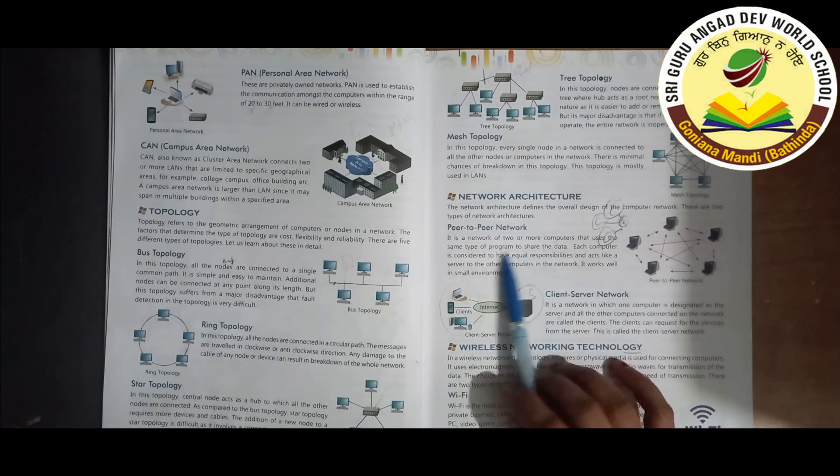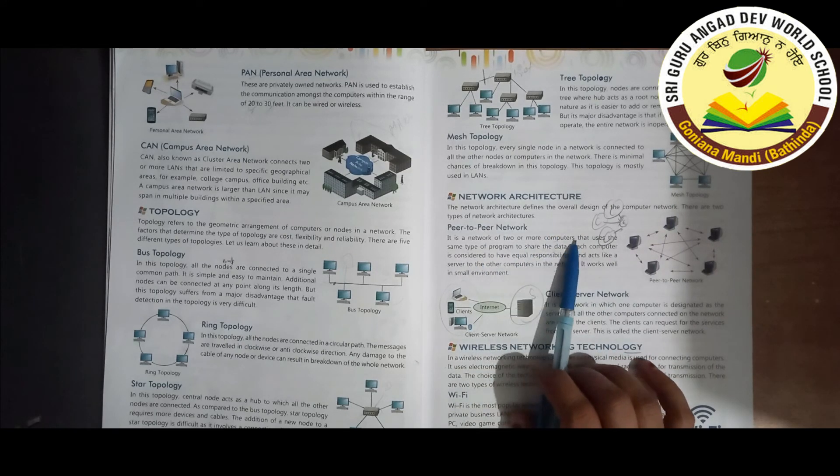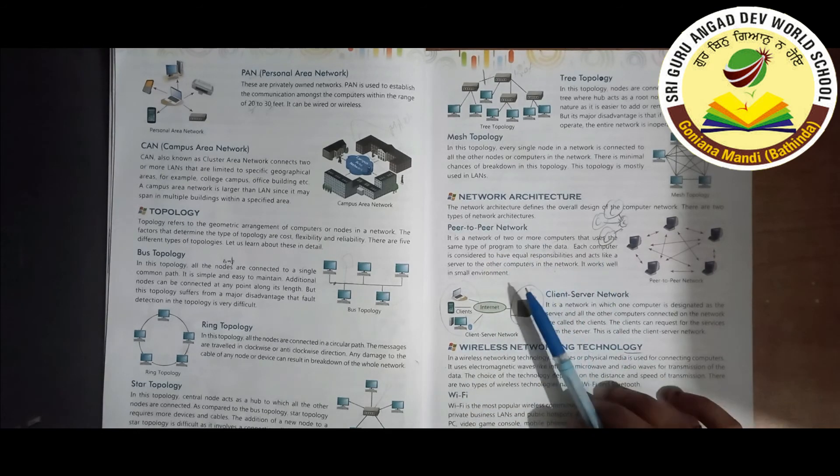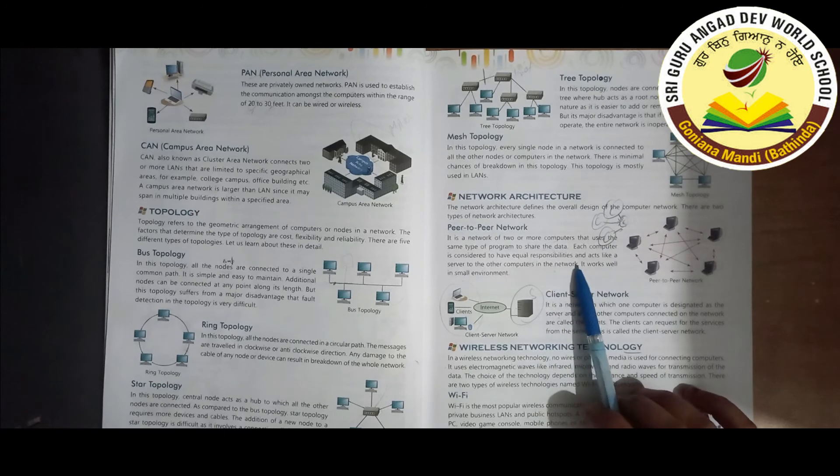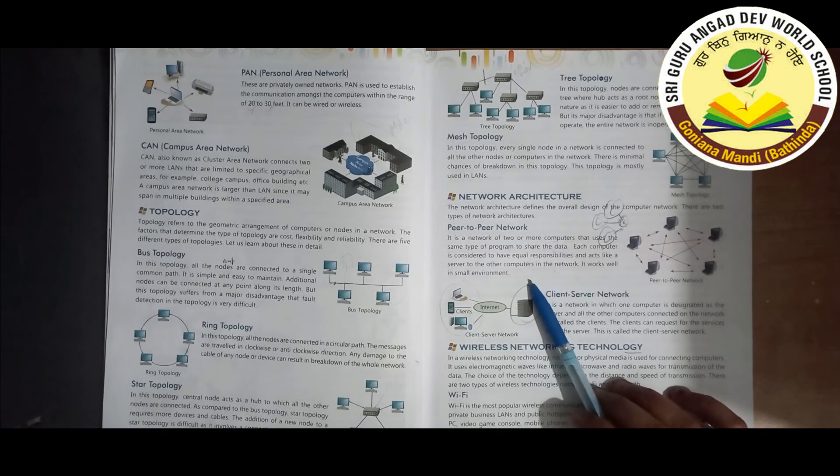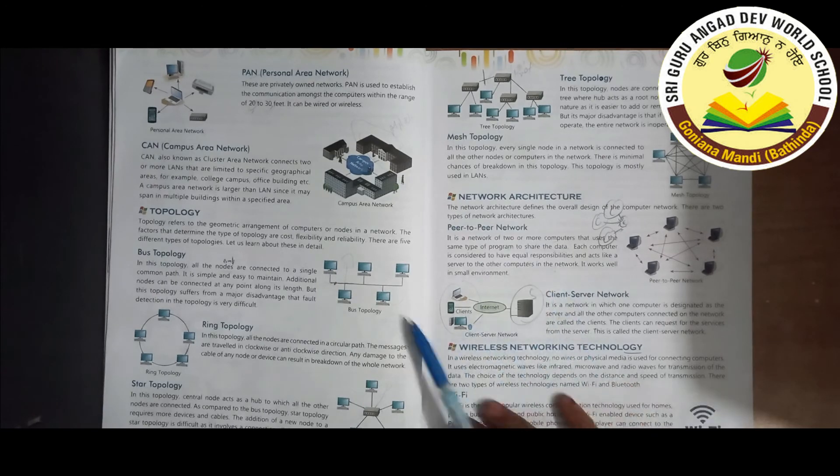Network Architecture: Peer-to-peer network means two or more computers that use the same type of program to share the data. Each computer is considered to have equal responsibilities and acts like a server to the other computers. It works well in small environment.